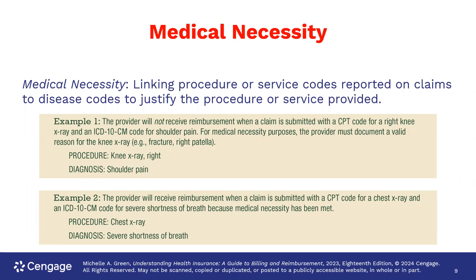They give you some examples here on the x-ray. If somebody's having shoulder pain and they get a knee x-ray, the provider is not going to get reimbursed because it's not related to the diagnosis. But they're going to get reimbursed when the chest x-ray is related to the shortness of breath. In an electronic health record system, sometimes you'll have an order for a test, and it will have to be linked to a pick list that has the diagnosis on it.